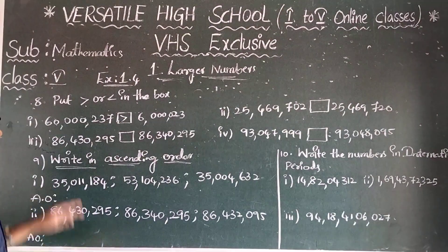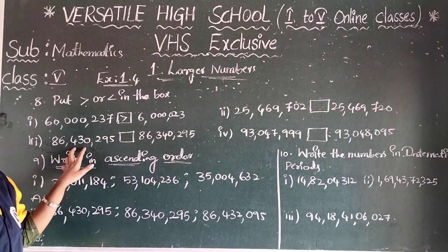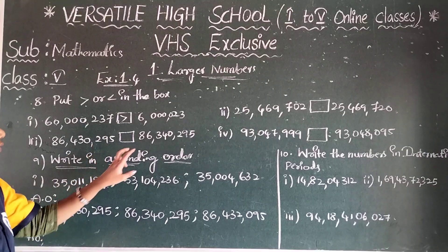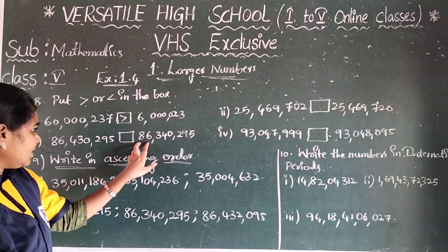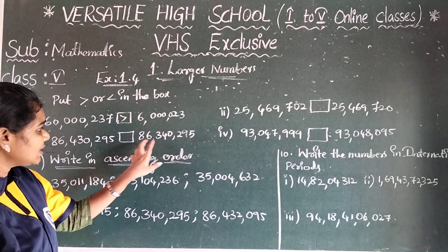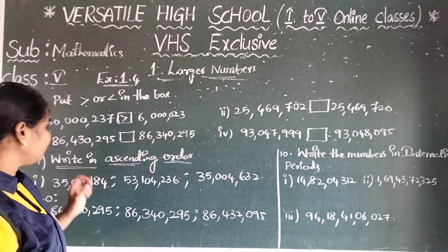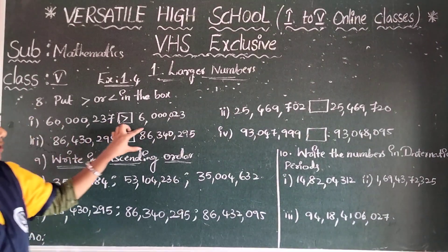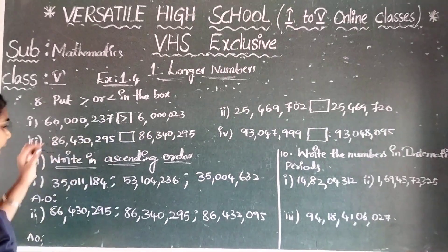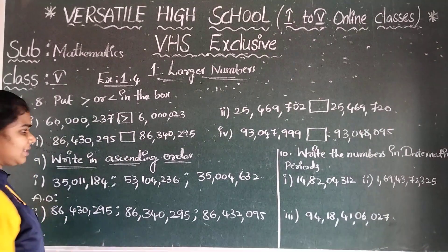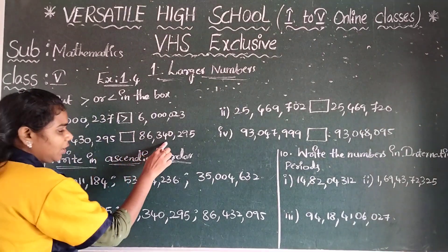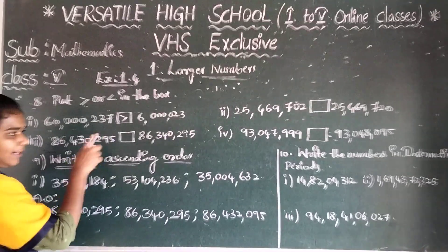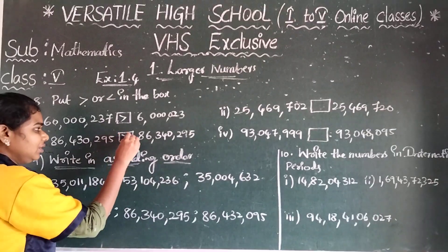Next pair: 86,430,295 and 86,340,295. Both have 86 millions, so go to the thousands place. 430 versus 340 — 430 is the greatest. Put the greater than mark.